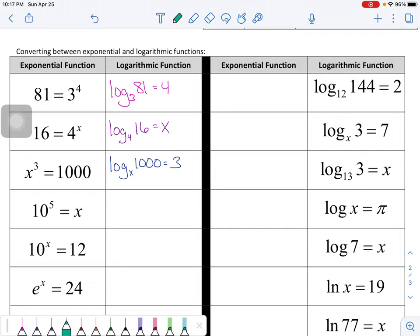10 to the 5th is equal to x. Now, this one I'm actually going to write twice. So this is log base 10 of x is equal to 5. Now, what I want you to know, base 10s are something that you can actually, I don't want to say ignore, but we assume.